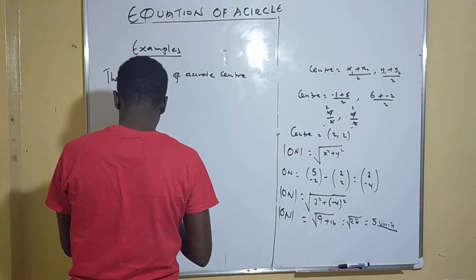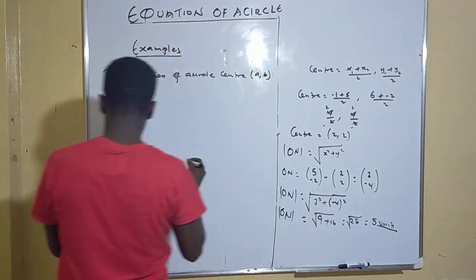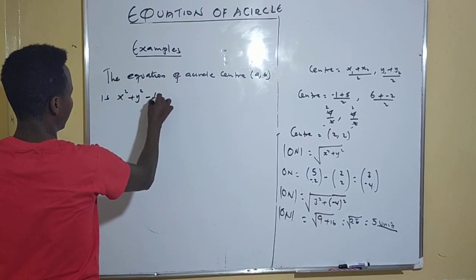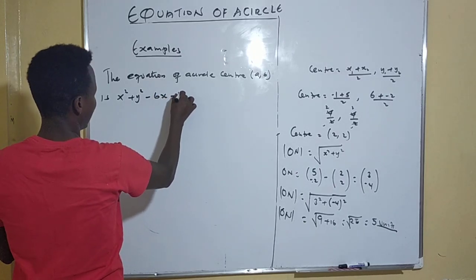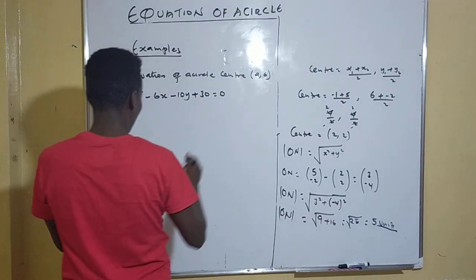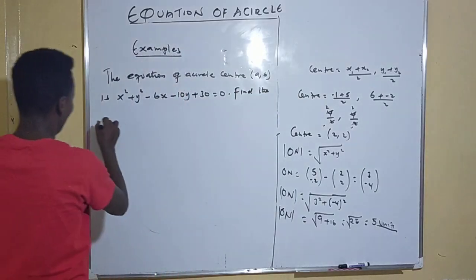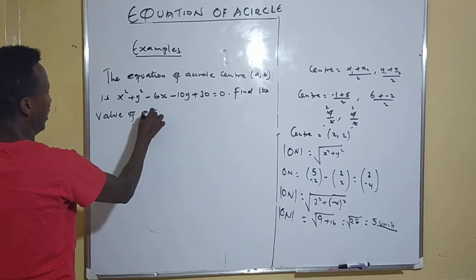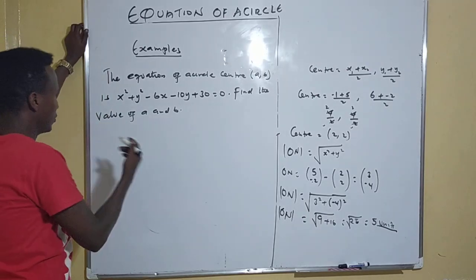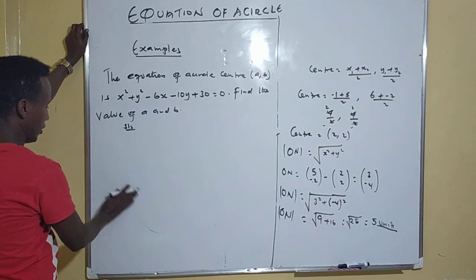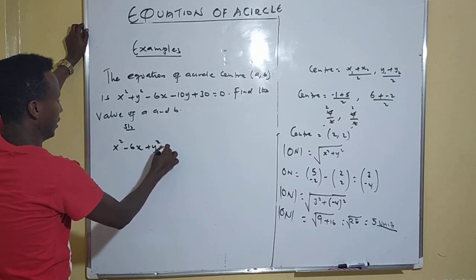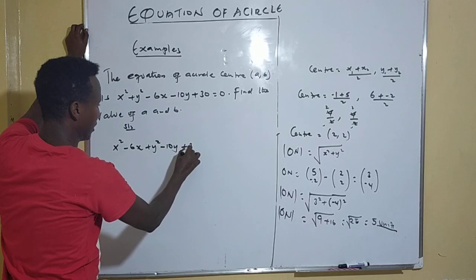Example three: you are told the equation of a circle with center (a, b) is x² + y² - 6x - 10y + 30 = 0. Find the values of a and b. Our equation is x² - 6x + y² - 10y + 30 = 0. Move the constant: x² - 6x + y² - 10y = -30.